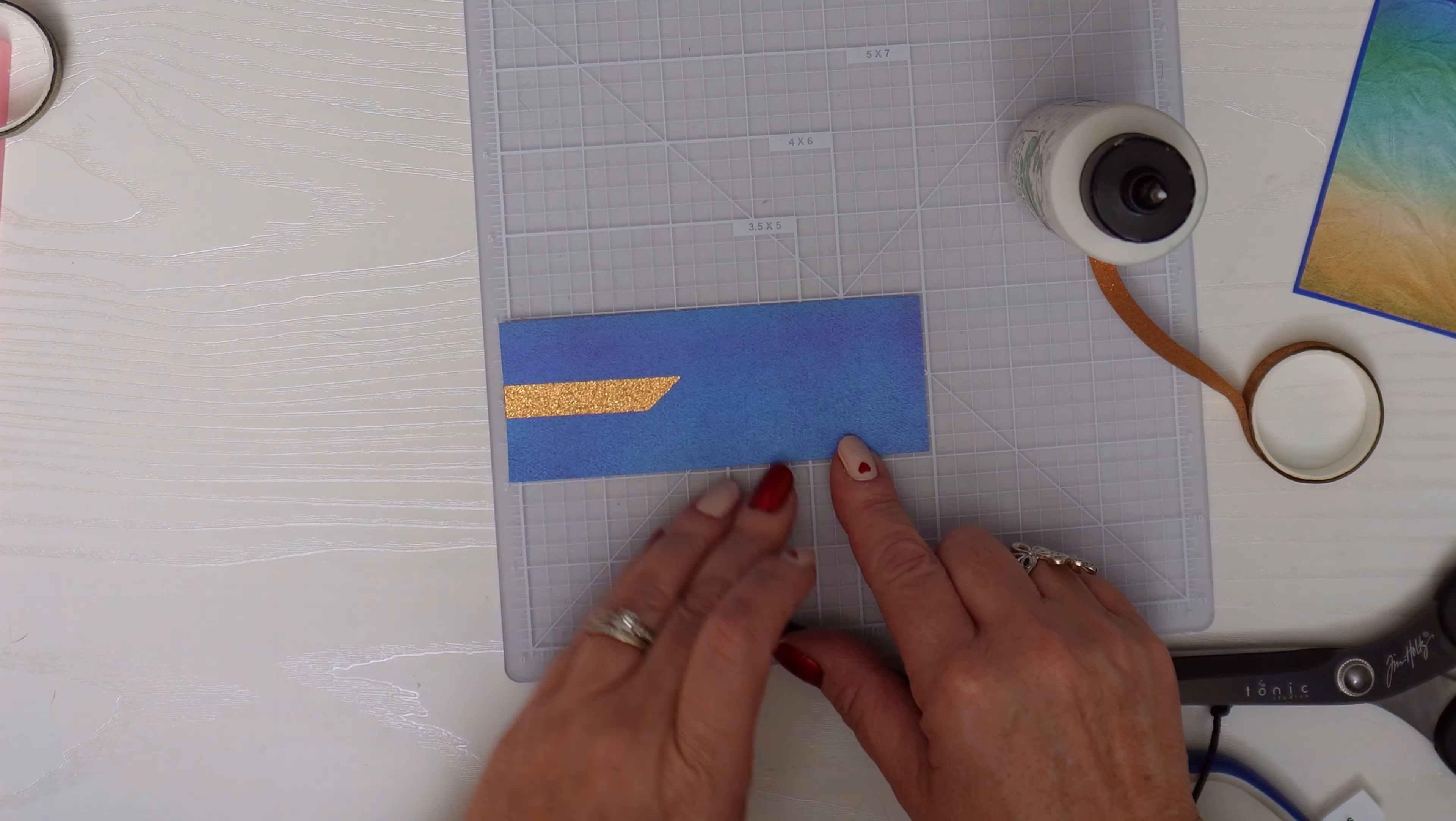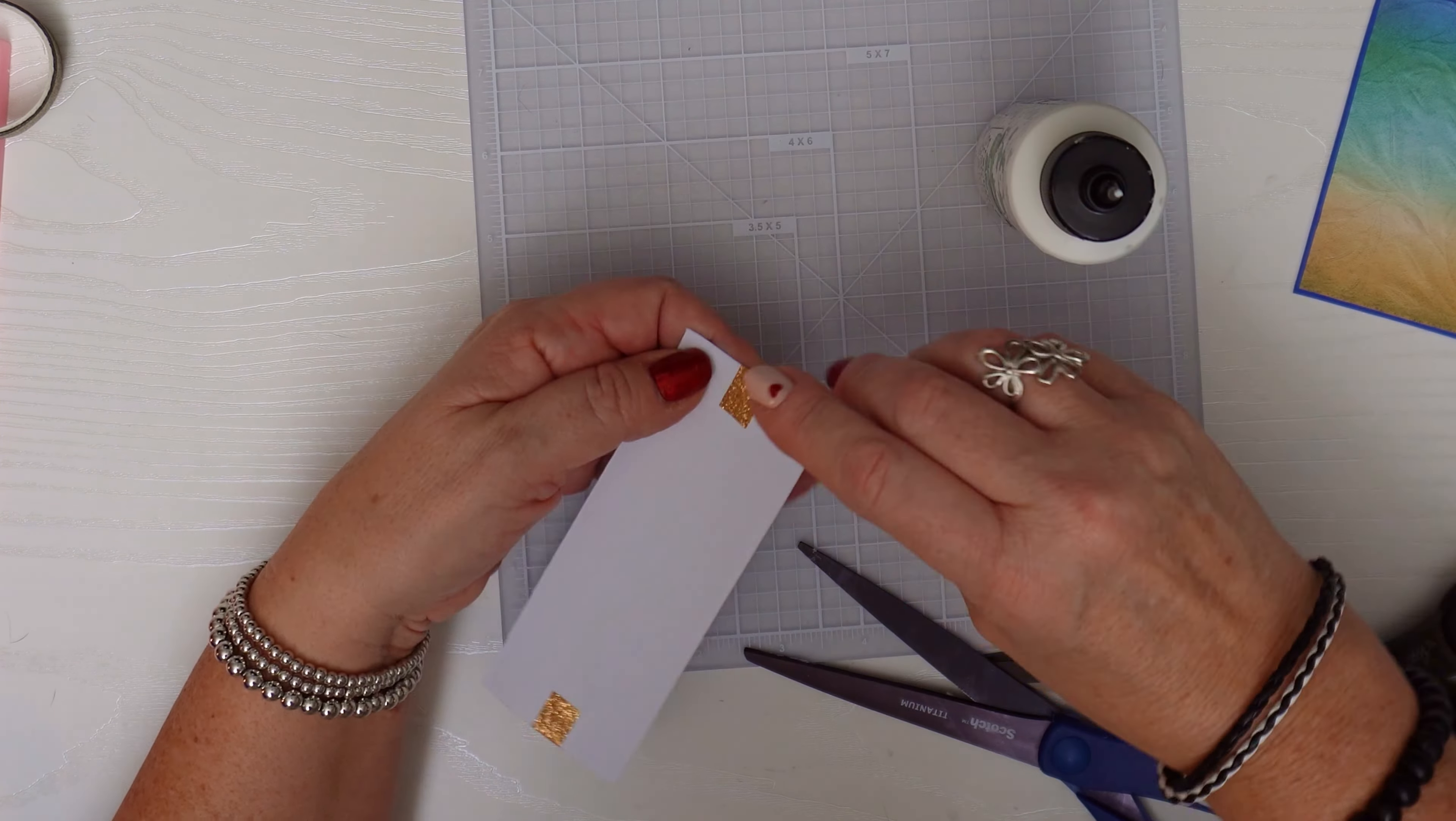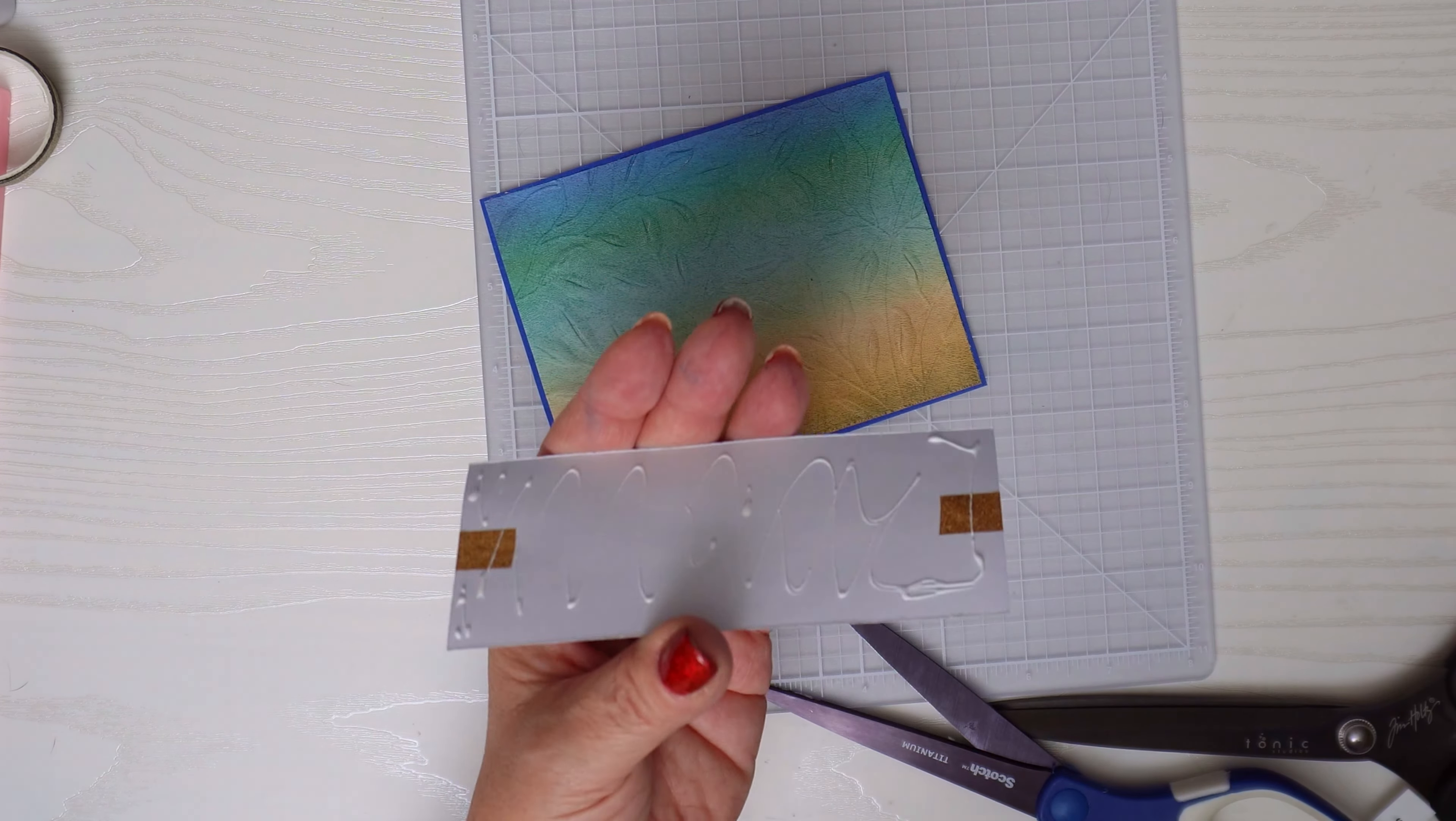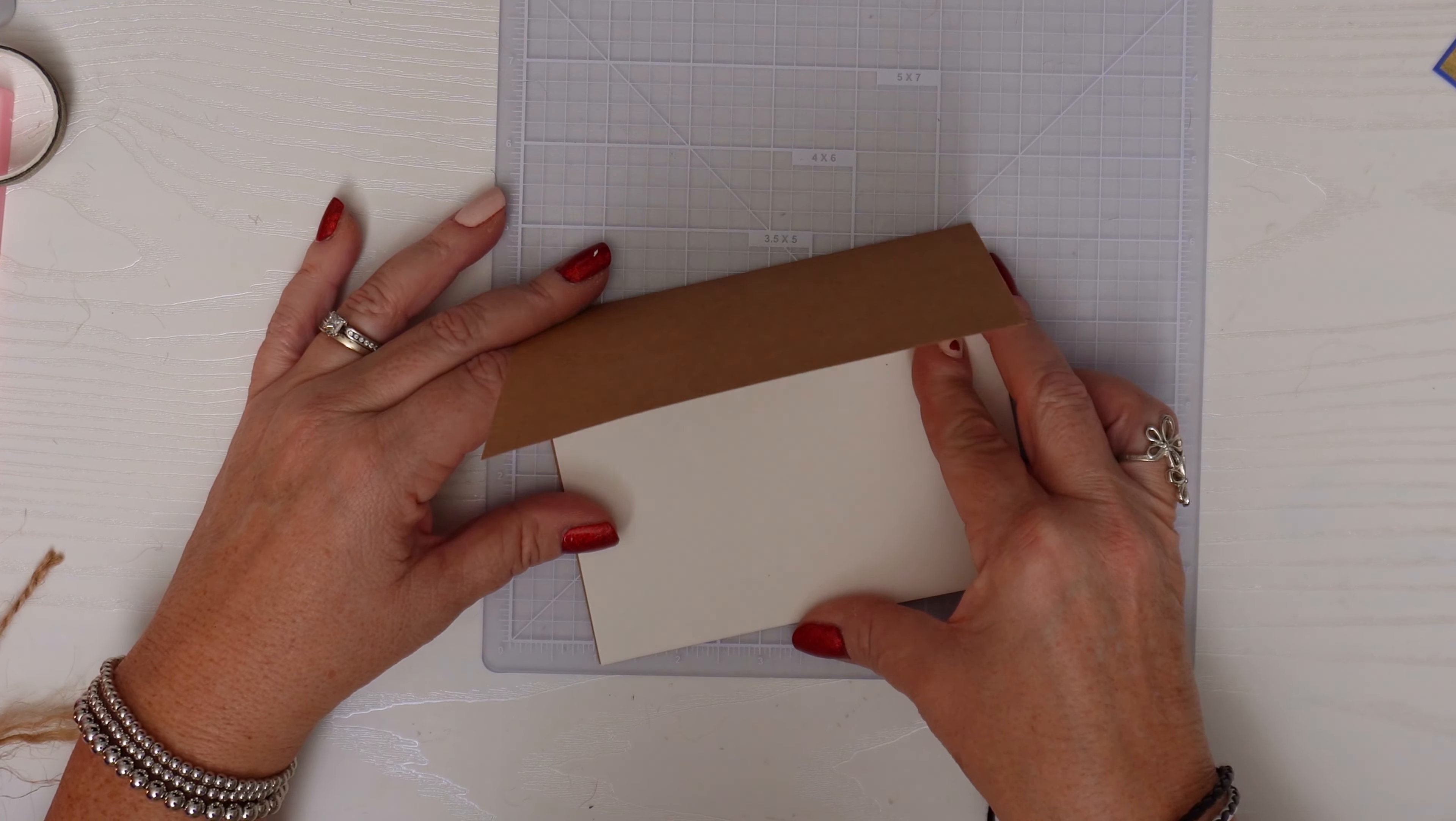I'll pop the sentiment up with some foam tape to give it a little dimension. Make sure you're always generous with your foam tape. I decided on the deeper gold color washi. I'll lay the sentiment strip on my cutting mat to make sure the washi tape is even. Washi is not very sticky so I don't like to pick it up and lay it down multiple times and make it even less sticky. The ruler on this cutting mat helps me get it right the first time.